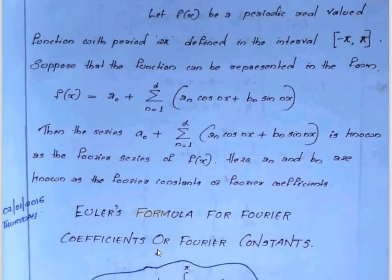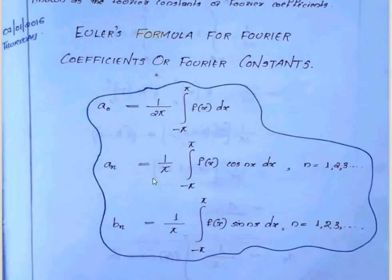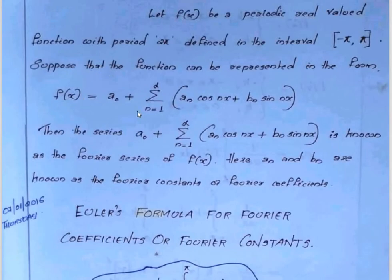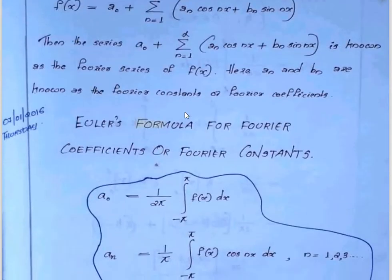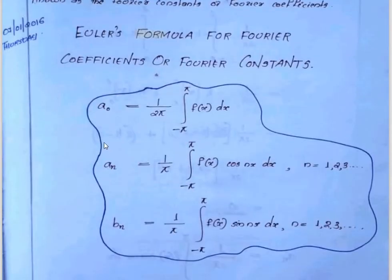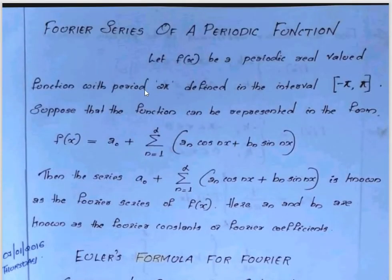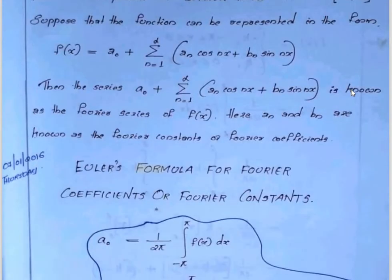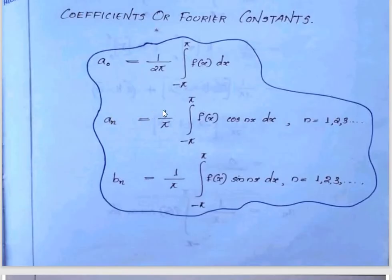Next, Euler's formula for Fourier constants or Fourier coefficients. The coefficient a0 is given by 1 over 2π times the integral from minus π to plus π of f of x dx. The period is 2π and the interval is minus π to plus π.